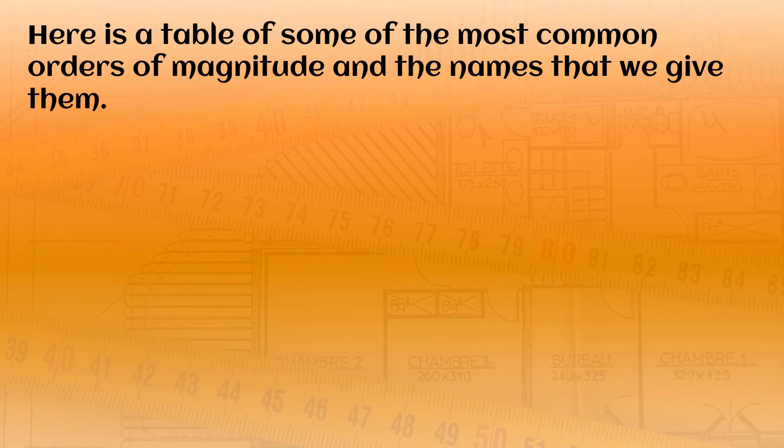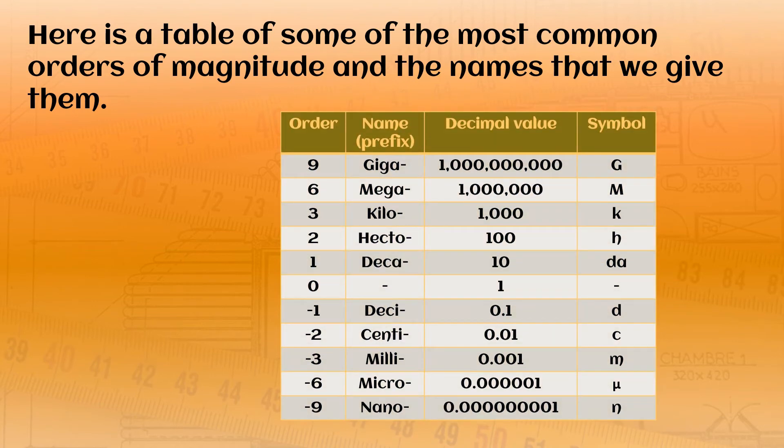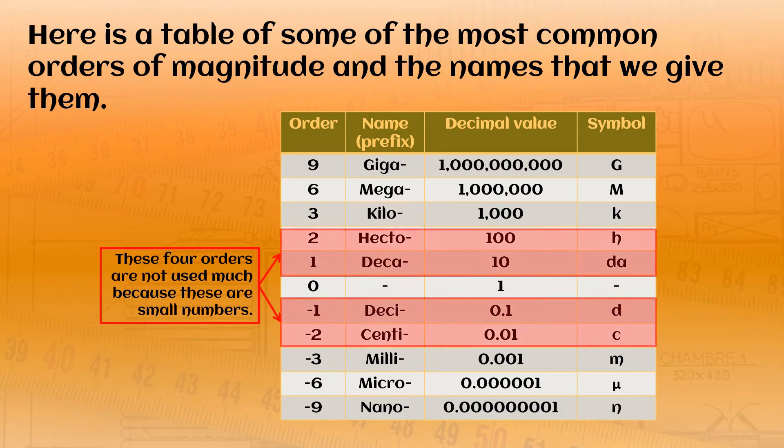Here is a table of some of the most common orders of magnitude and the names that we give them. You can see that the ones near to one, they are not used very much because they are such small numbers, although we do use centimeters. But then above that you can see kilo, like kilogram or kilometer. Giga, gigabytes on your computer, although many of you are probably up to terabytes now. But you can see the order is given as a number, and this is the orders of ten away from one.